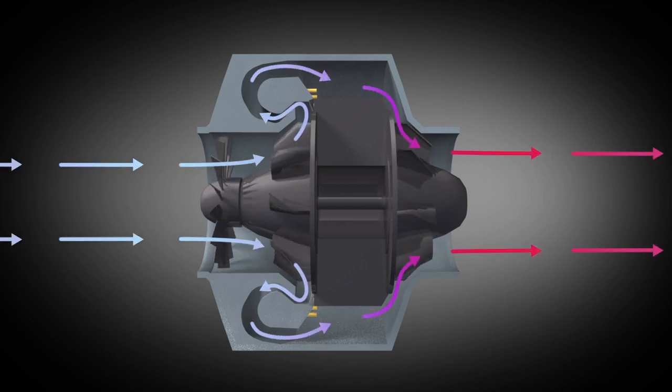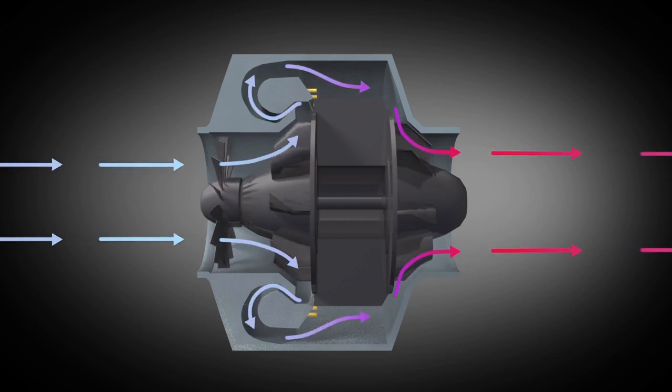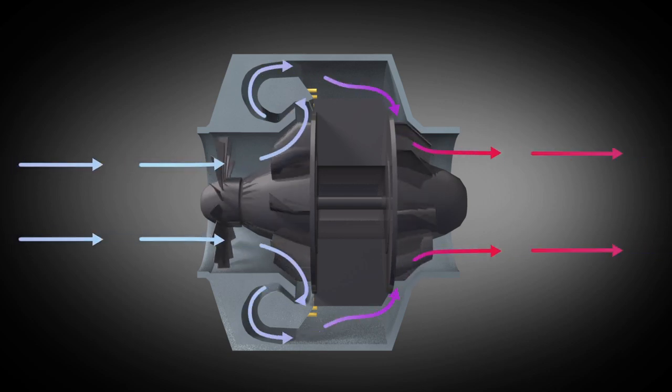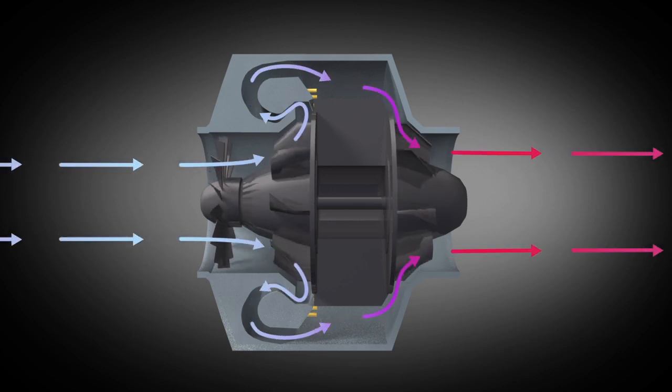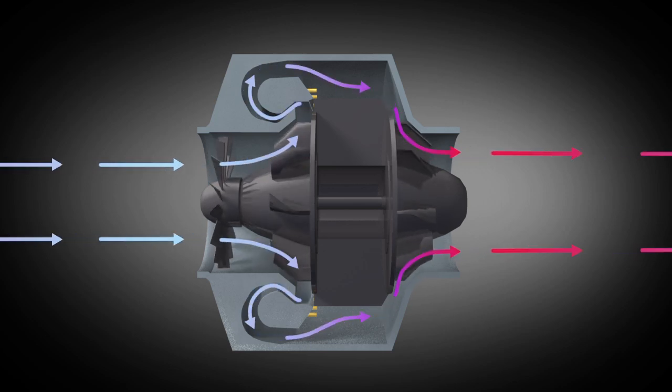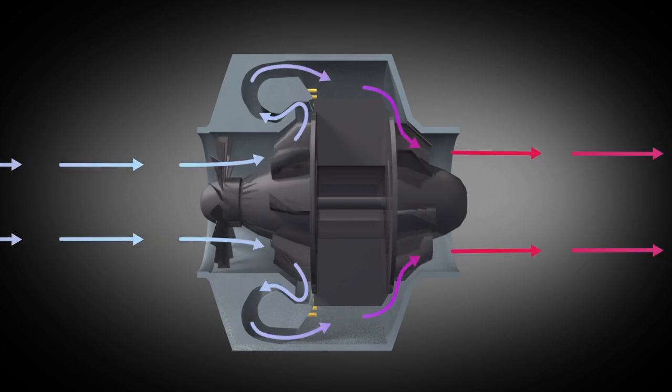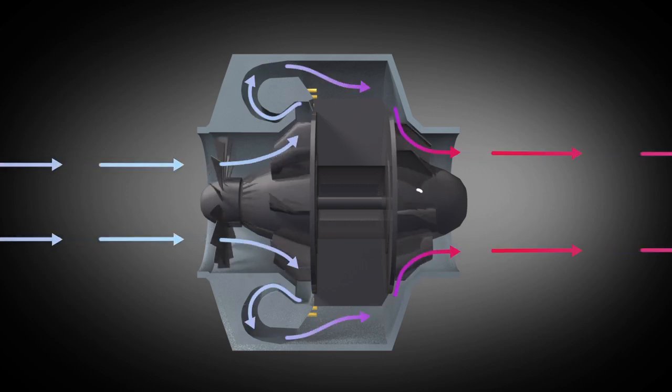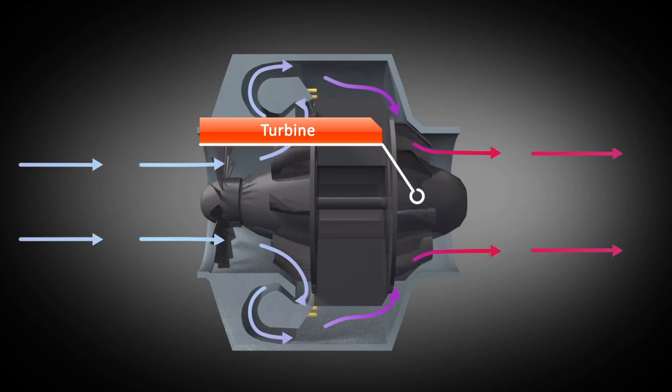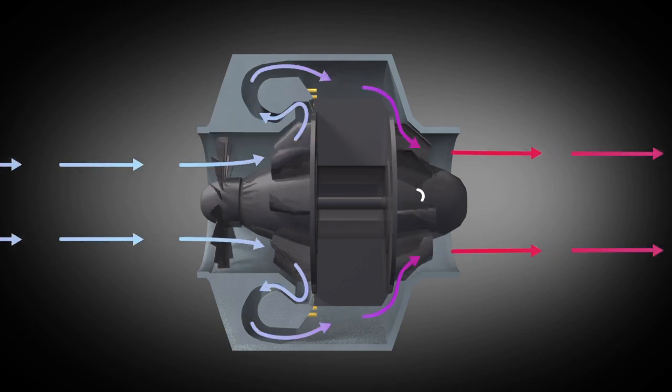At first, this is achieved with igniter plugs. But once running, the engine only requires an input of fuel to maintain a self-sustaining combustion cycle. The combustion leads to a raise in temperature and an increased speed of the gas flow. The turbine is set in motion and drives both compressors.